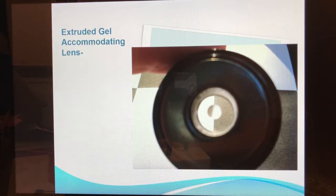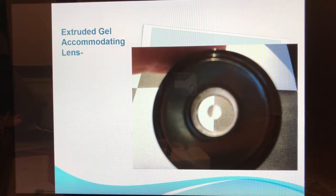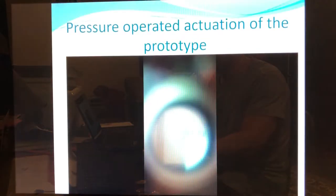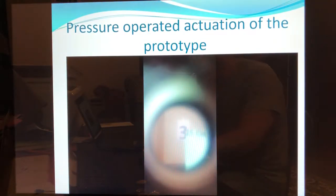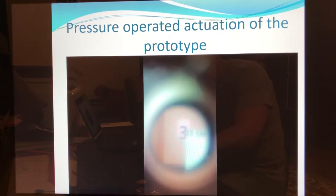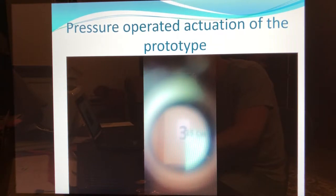You can see the image target of the deformable interface accommodating IOL in a testing cell. Alternative image targets both at three millimeters and 15 centimeters show the accommodation of the lens prototype actuated by a pressure alternating between zero and three grams.